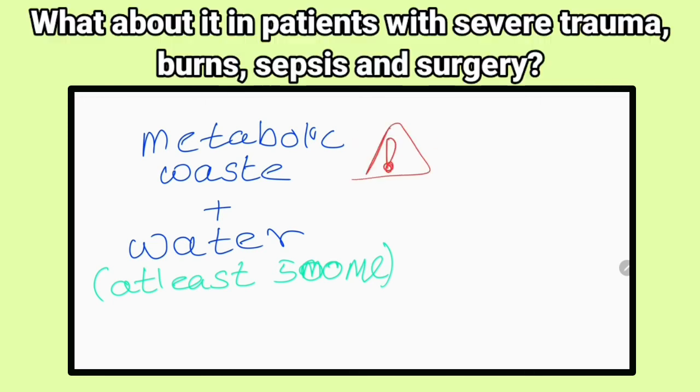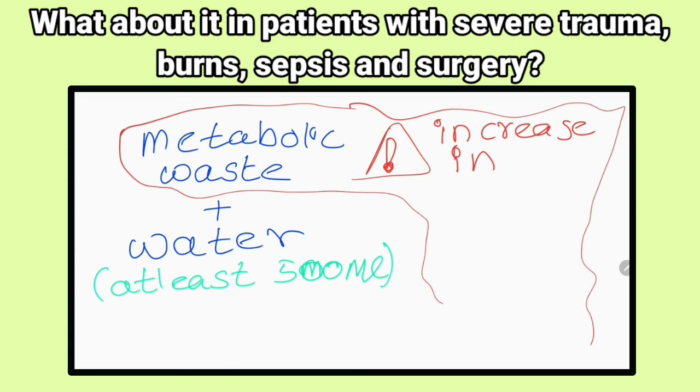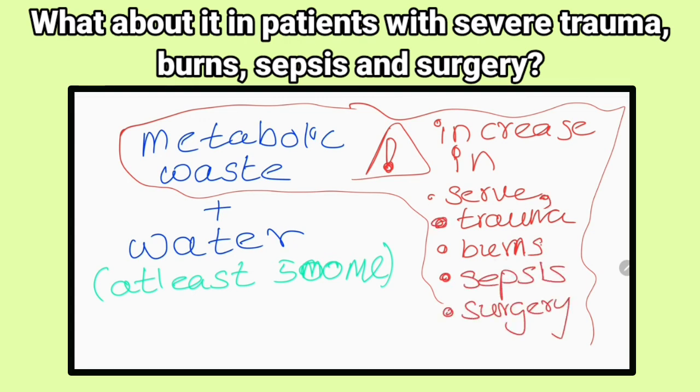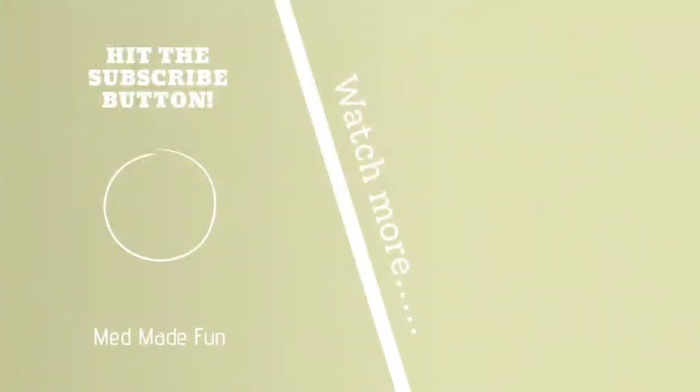What about the lower limit of urine output for patients with severe trauma, burns, sepsis, and surgery? It should be more than 500 milliliters per day because they have high metabolic rates, so more metabolic waste is produced.